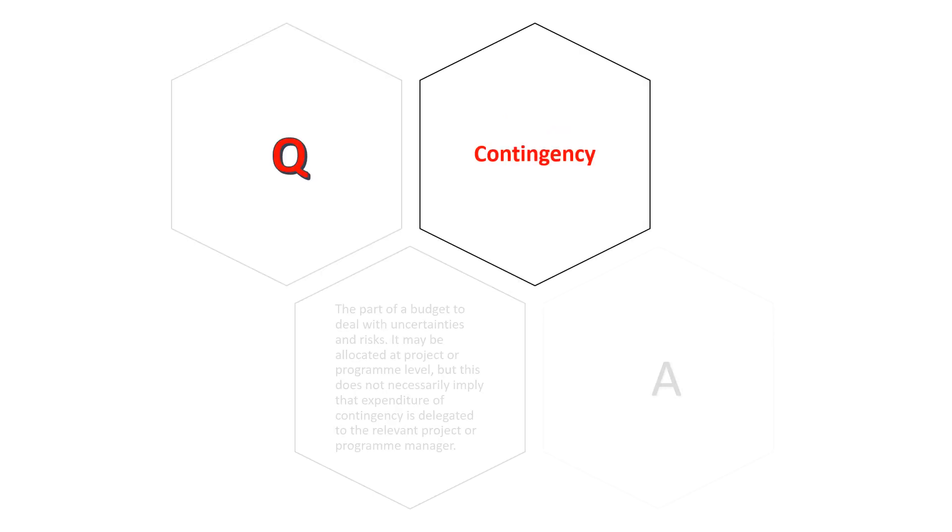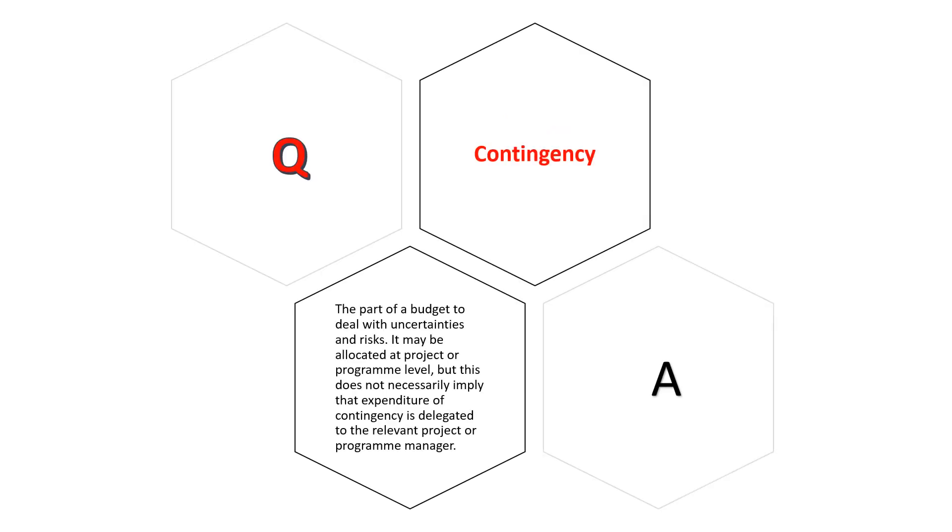Contingency: The part of a budget to deal with uncertainties and risks. It may be allocated at project or program level, but this does not necessarily imply that expenditure of contingency is delegated to the relevant project or program manager.